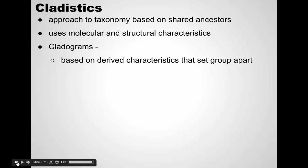So up until the 1950s and 60s, how were scientists putting organisms into different groups? What was it based on? Structure — what did they look like, what parts did they have?